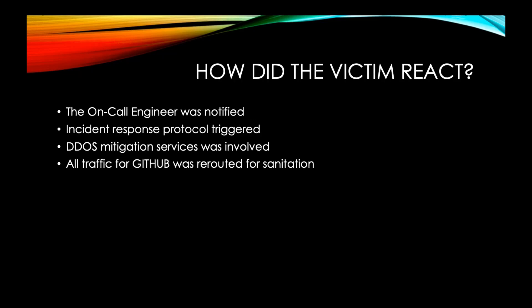How did the victim react? The engineers on call at GitHub were immediately notified of the situation, and within five minutes of the incident, GitHub activated its incident response protocol where mitigation service Akamai Prolexic was involved. All traffic coming into and out of GitHub was routed through its scrubbing center to weed out and block malicious packets. After eight minutes of standoff, the attacker relented and dropped off.